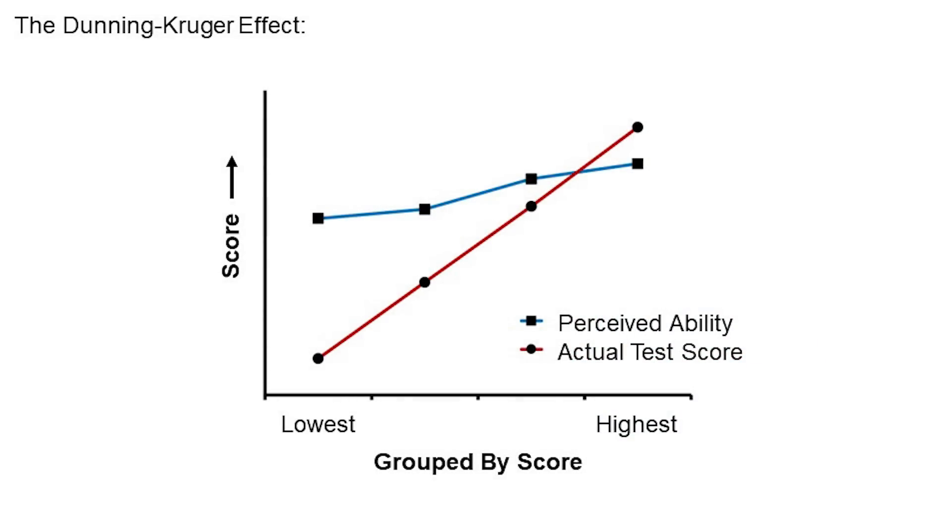So, if we take a sample of people and we divide them into four groups based on their scores on a test, and order those groups from lowest to highest. If we plot those scores on a graph, along with their self-estimates, so how well they thought they did on the test, this is the pattern that we see. So, the red line is a steep slope representing their actual scores, as it must be since we ordered the groups based on their scores in the first place.